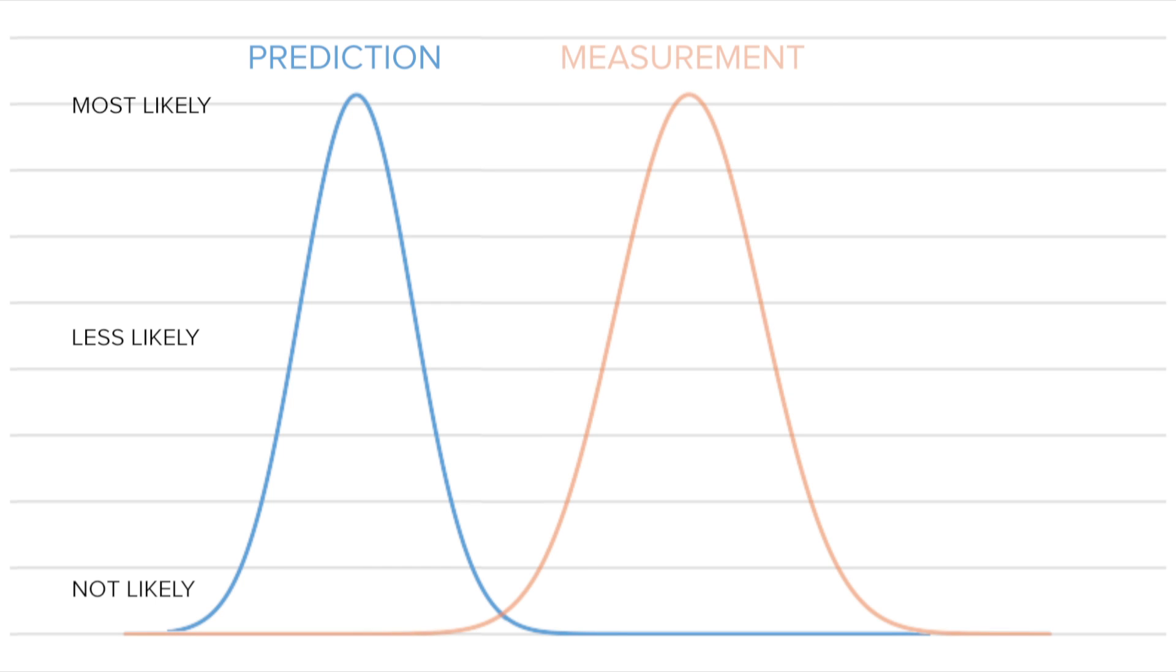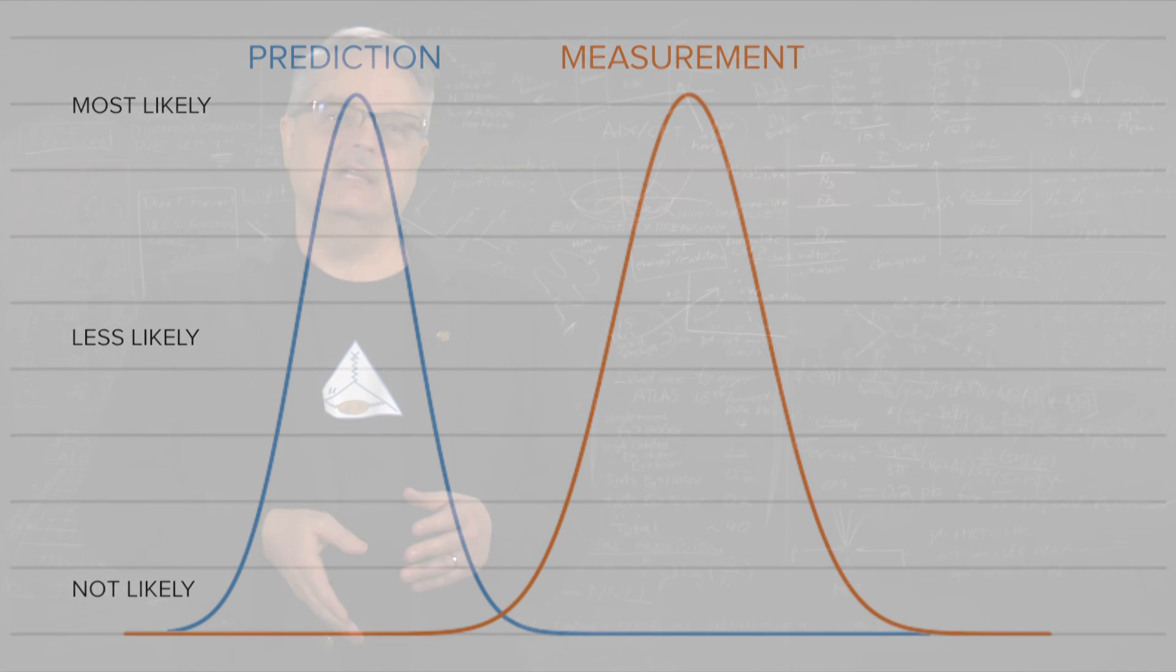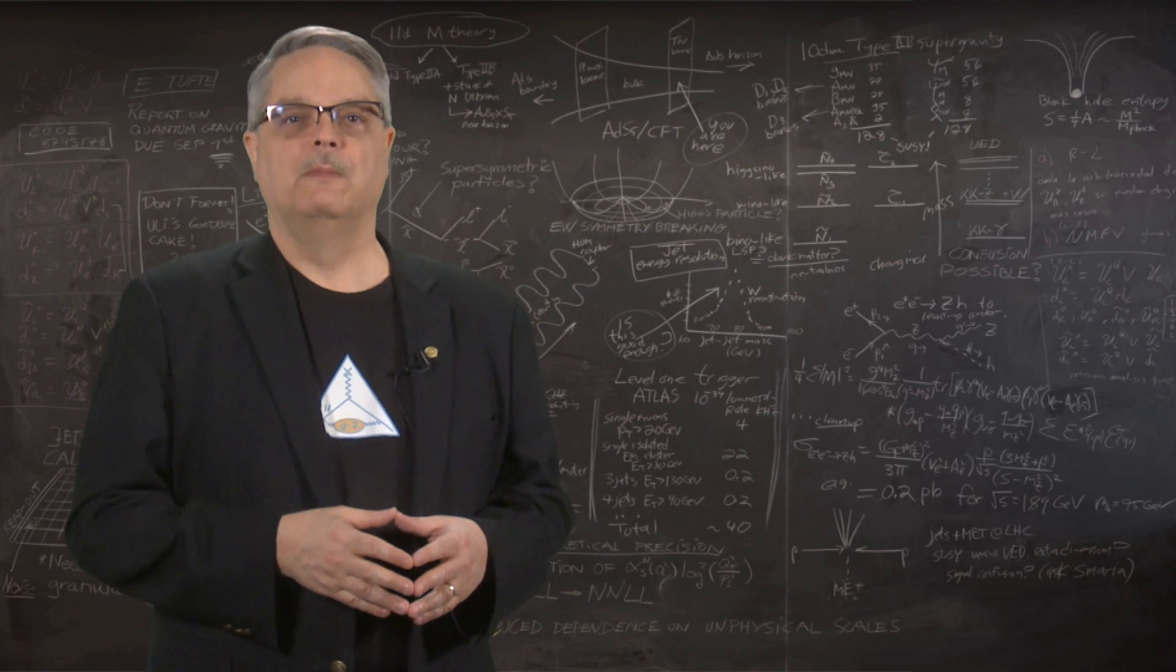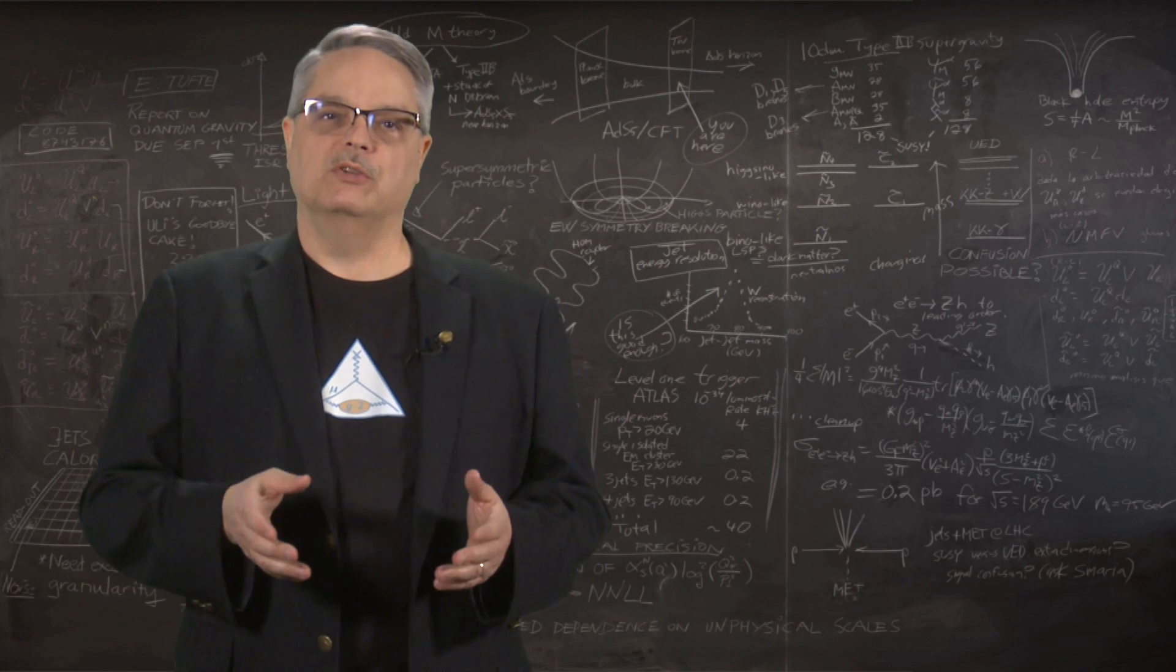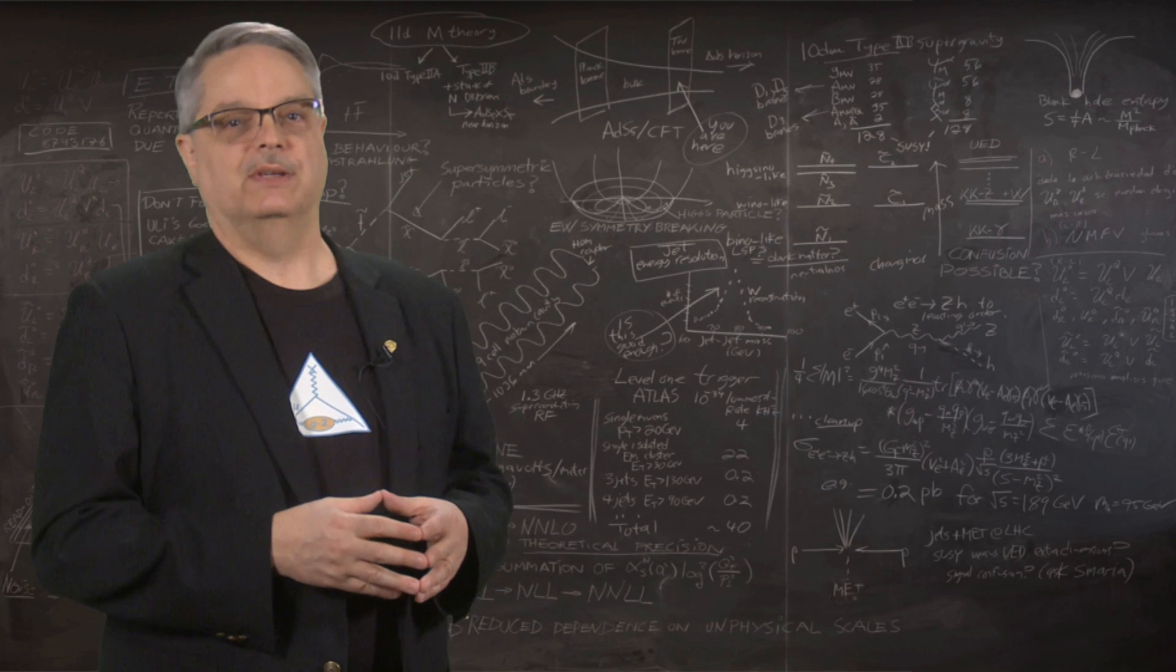So now, I put the experimental curve back on, and the same rules apply. The first thing you notice is that they don't overlap very much. That means that the theory and the experiment don't agree very well. And when the prediction and measurements don't agree, that means that maybe you've discovered something.